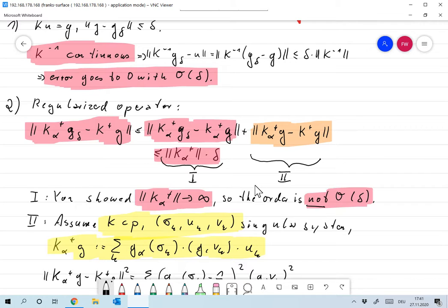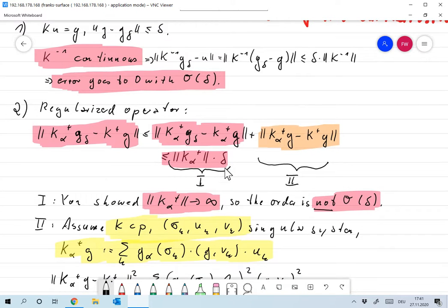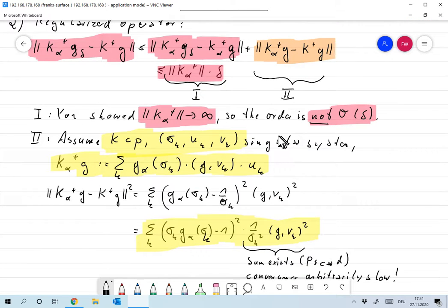So the rate is somewhat smaller. We already have to expect that the error bound, that the order of convergence with delta for that bound will go to zero slower than for a normal invertible operator. Okay, so that's number one, but that's not very surprising.